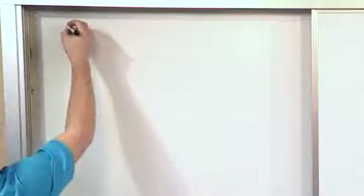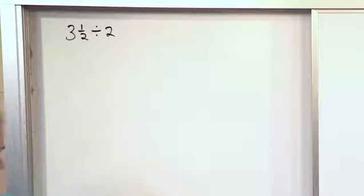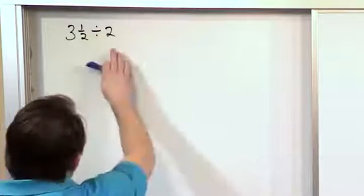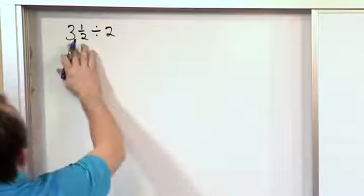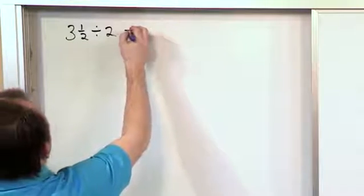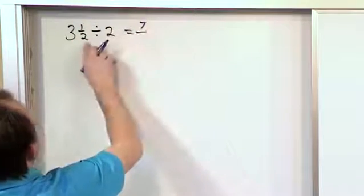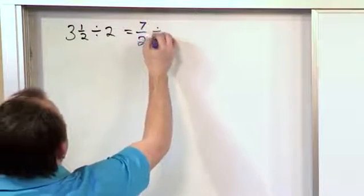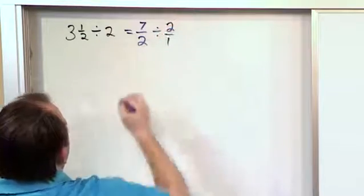So let's take our first problem and see how easy it's going to be to take something like 3 and 1 half and divide by 2. We have a mixed number here. We're dividing by a whole number but I think by now you know that this is going to be a fraction too. So first we're going to change the mixed number into improper. 2 times 3 is 6 plus 1 is 7 and we write it over 2. The division sign remains for now and we want to write the 2 as 2 over 1.